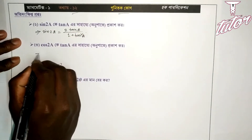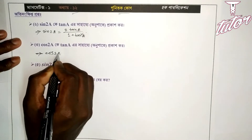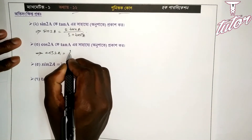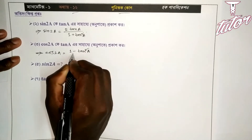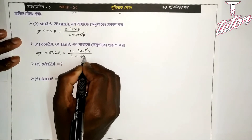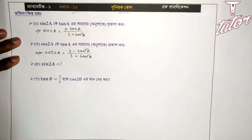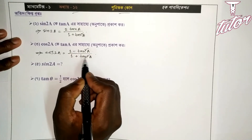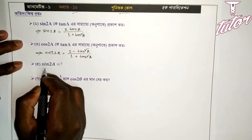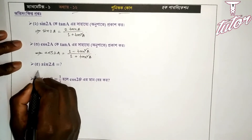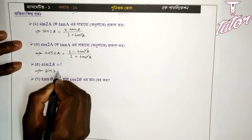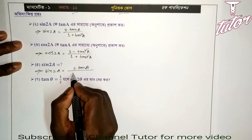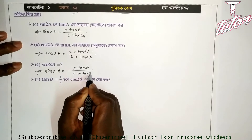Then cos 2a — we will write cos 2a equals 1 minus tan squared a by 1 plus tan squared a. So sin 2a is 2 tan a by 1 plus tan squared a, and we write 1 plus tan squared a.